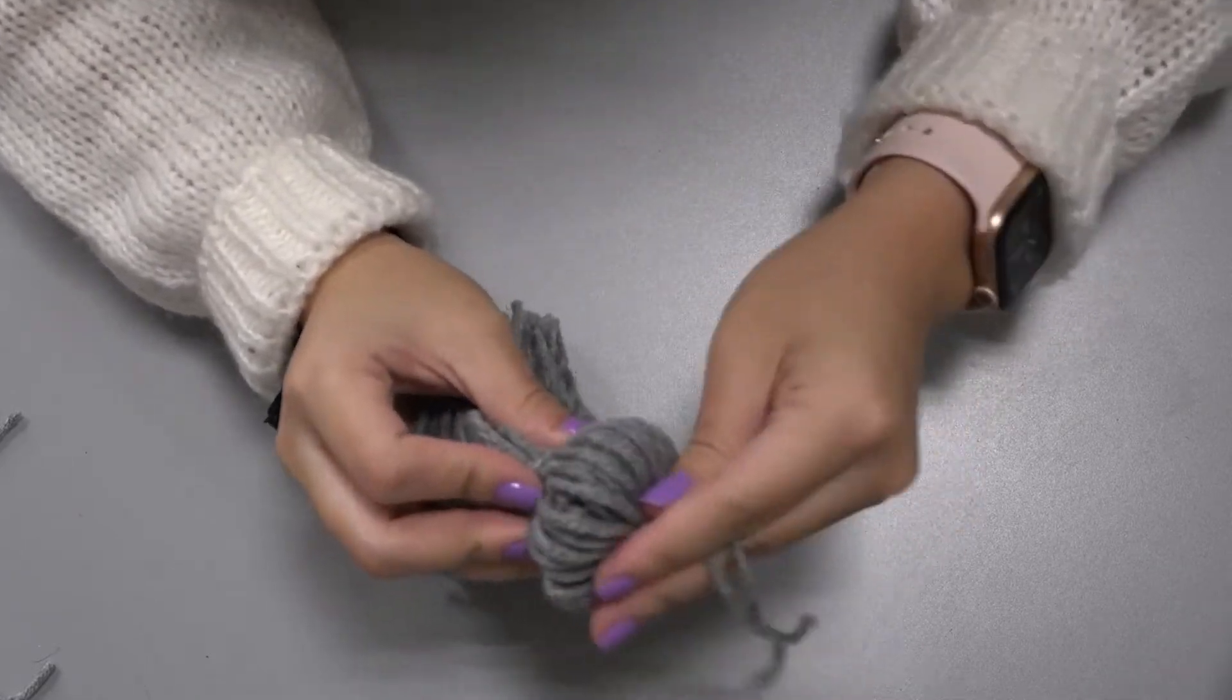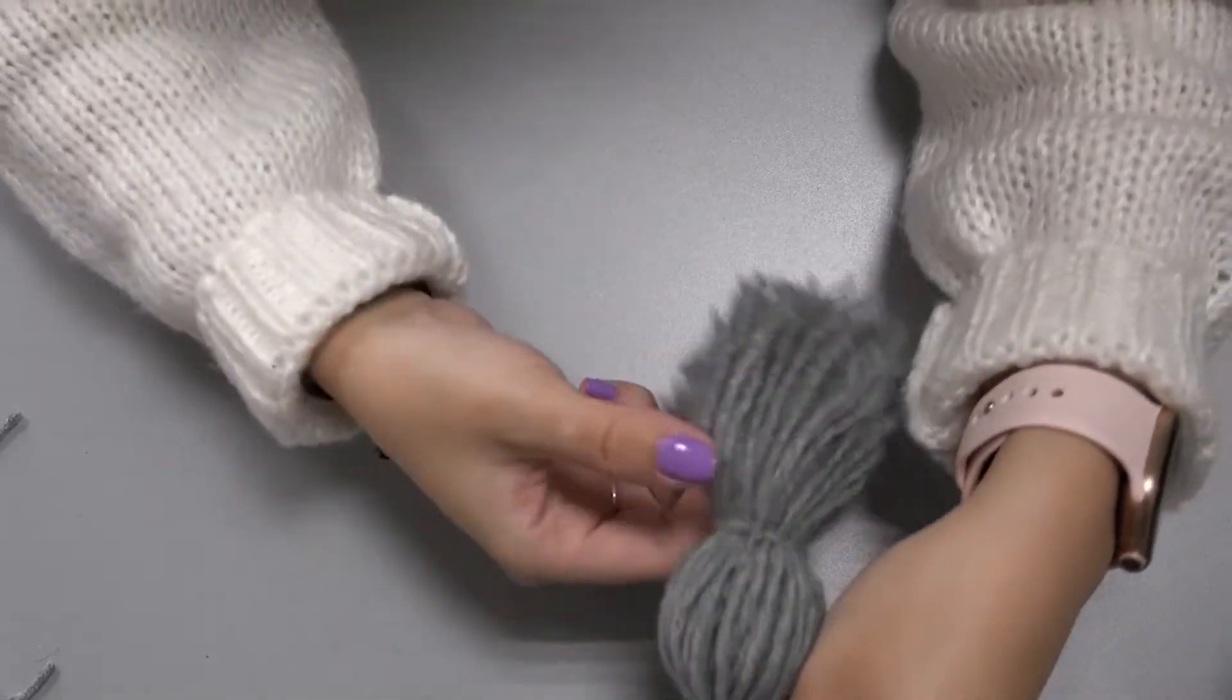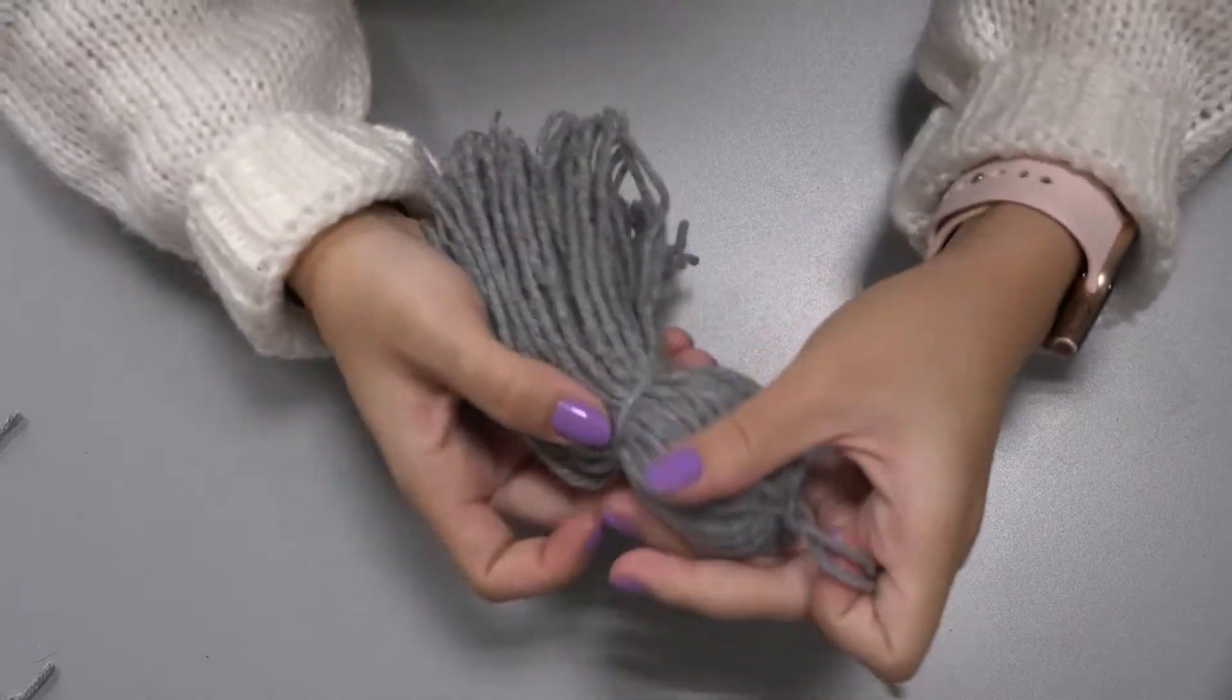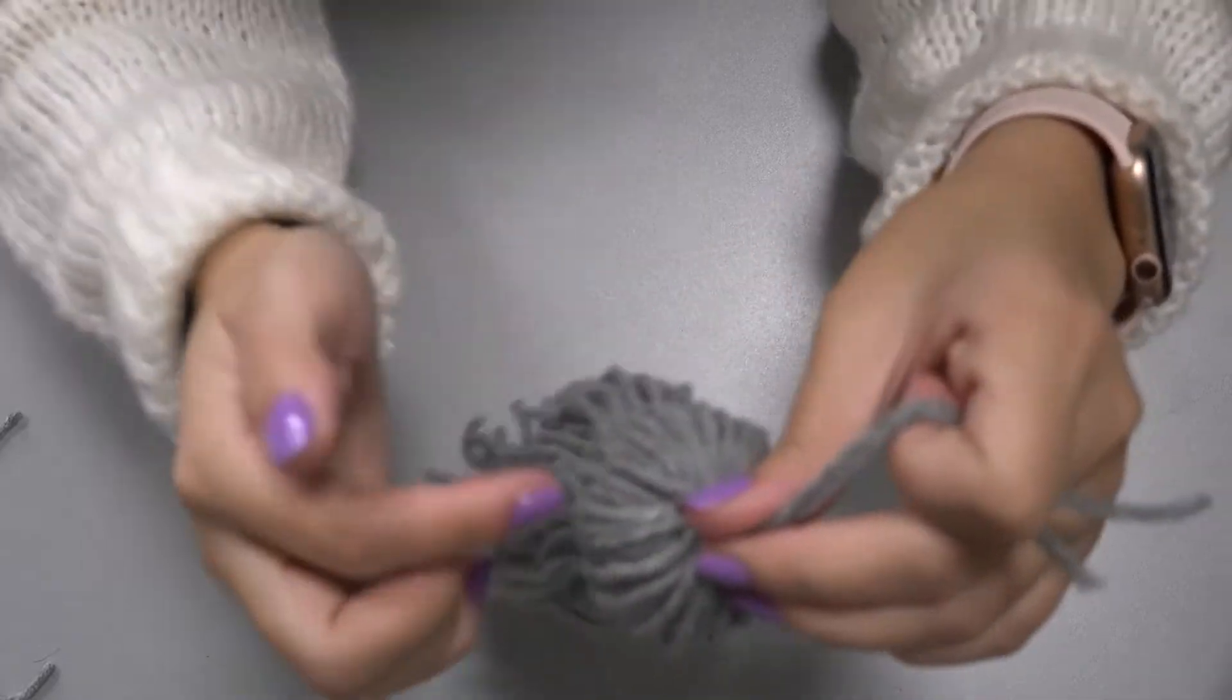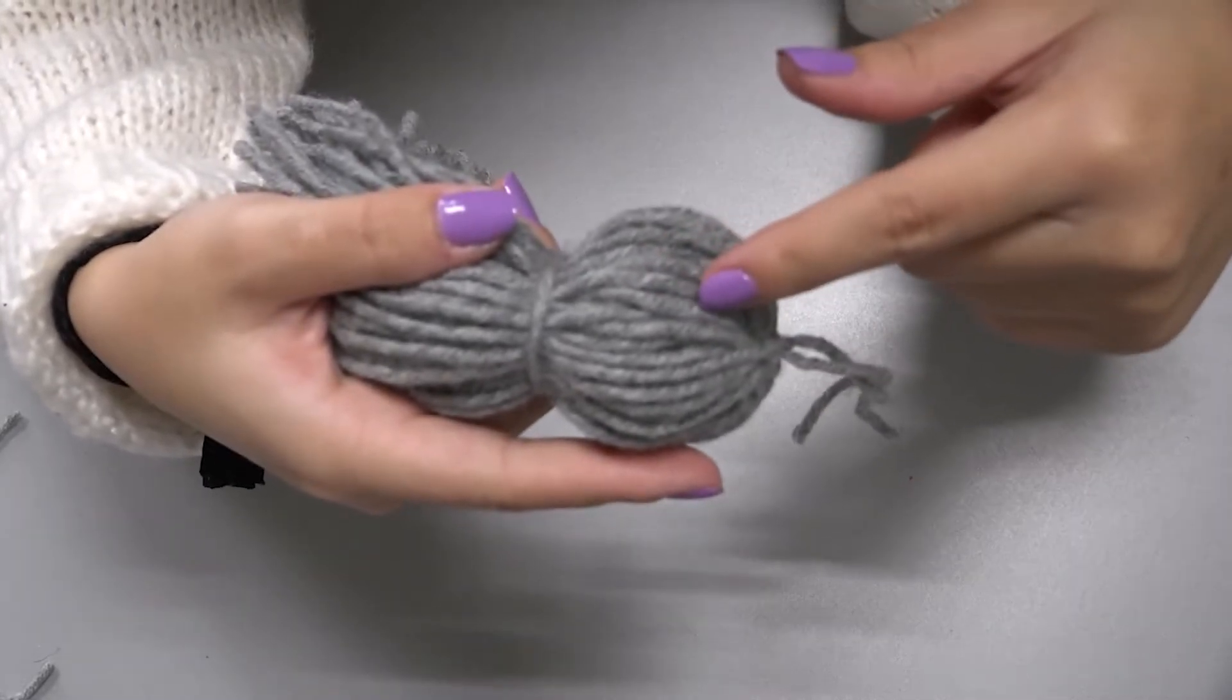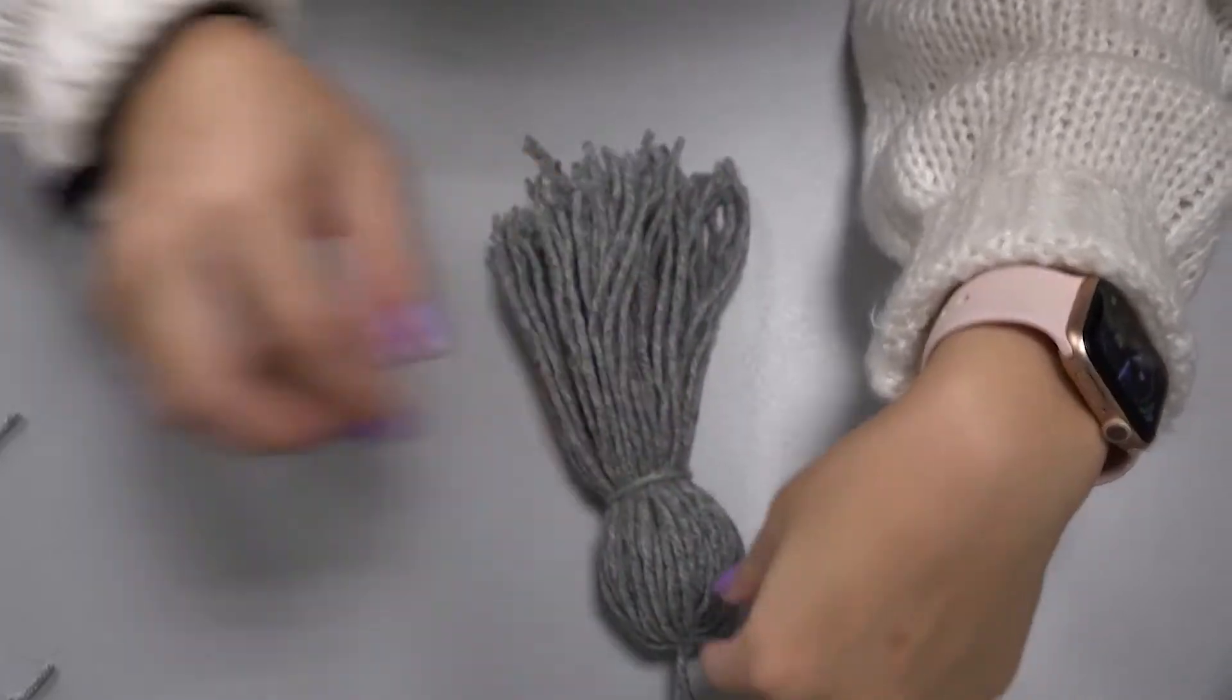So once you have the string tied on, you can adjust where the head cuts off. So you can adjust it to the size of your eyeballs. You can make it smaller. You can make it bigger. You could even put like a small sphere or like a foam sphere inside of it if you want. I'm just going to leave it like that.